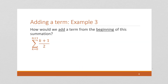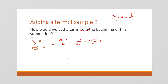This question is similar, except instead of adding a term to the end, we're going to add a term to the beginning of the sum. Again, first step: expand. We start at k equals 0: (0+1)/2, (1+1)/2, all the way up. We end at n+1, so we have (n+1)/2 and then the final term is (n+1+1)/2. So this is our expanded sum, and now we want to add a term to the beginning.